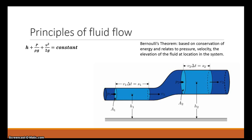One of the main principles you'll concern yourself with when designing a mold for a casting is Bernoulli's principle and Bernoulli's theorem. It's based on the conservation of energy and it relates to the pressure, velocity, and elevation of a fluid at any location in the system. So when you have a mold with a sprue, gating system, runners, and all the other components, you have to consider the pressure, how fast the fluid is traveling through the system, and any elevation changes.